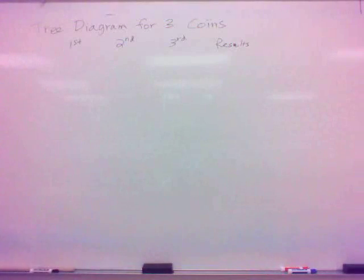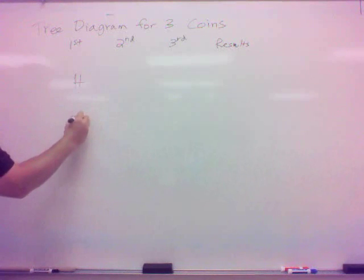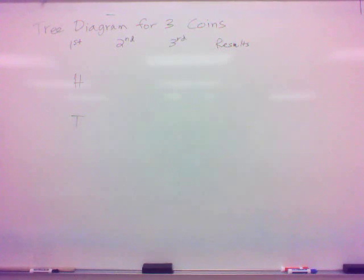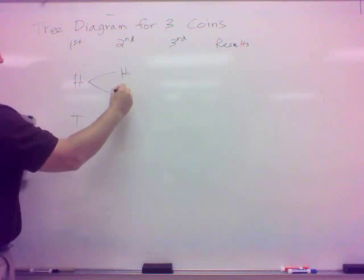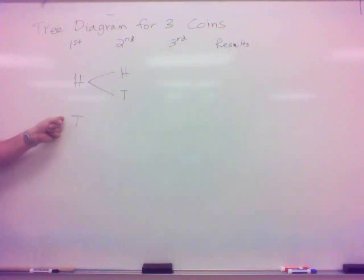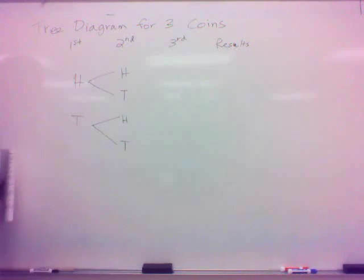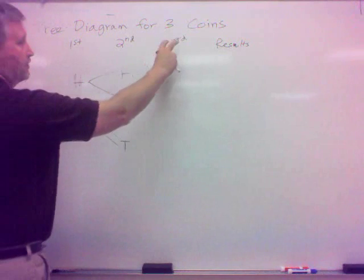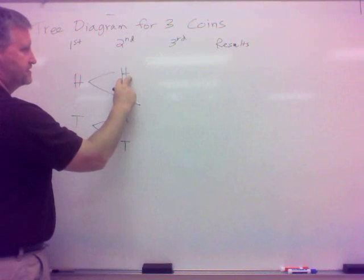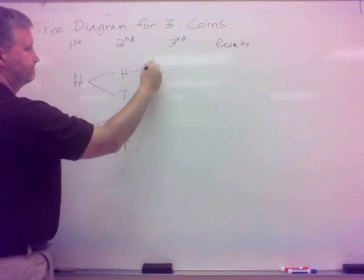It's called a tree diagram. What you do, we're flipping three coins. I'm going to do the first coin here, second coin, and then third coin, and then the results will be over here. So we start with the first coin, and the first coin could either be heads or tails, right? So I'm going to space those out a little bit, heads or tails, because what I'm then going to do is branch off to the second coin.